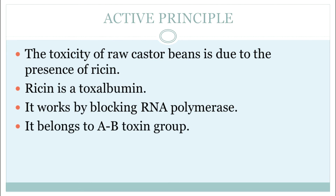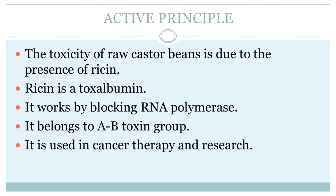Ricin belongs to the AB toxin group — there is a group of toxins called AB toxins and ricin belongs to that group. Also, this plant is used in cancer therapy and for research purposes.